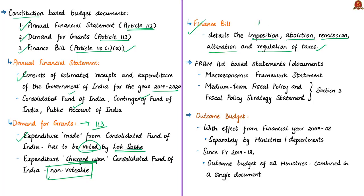As part of the budget, two important statements were laid before Parliament based on provisions of the Fiscal Responsibility and Budget Management Act — the FRBM Act of 2003. These statements are the Macroeconomic Framework Statement and the Medium Term Fiscal Policy and Fiscal Policy Strategy Statement. These two statements are presented to Parliament based on Section 3 of the FRBM Act of 2003.